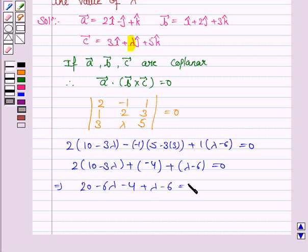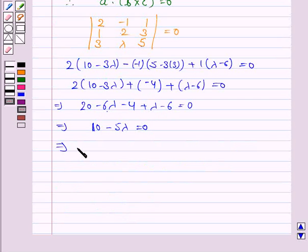Now this implies 20 minus 6 lambda plus 4 plus lambda minus 6 equals zero. So 10 minus 5 lambda equals zero.